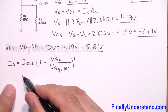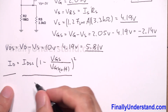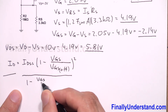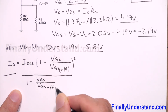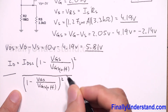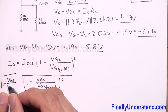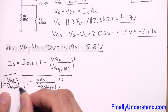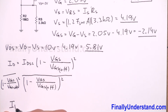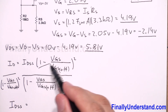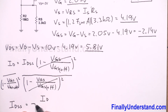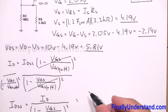To solve for IDSS, we divide both sides of the equation by the parenthesis (1 - VGS/VGS(off))². The squared terms cancel, giving us IDSS = ID / (1 - VGS/VGS(off))².